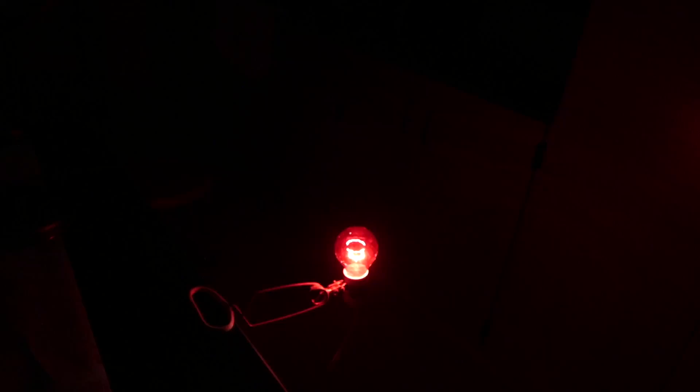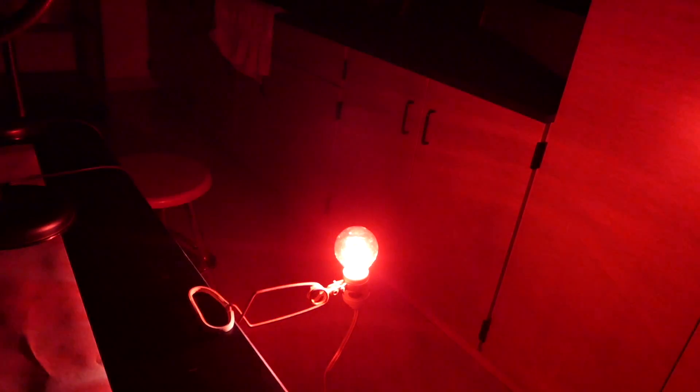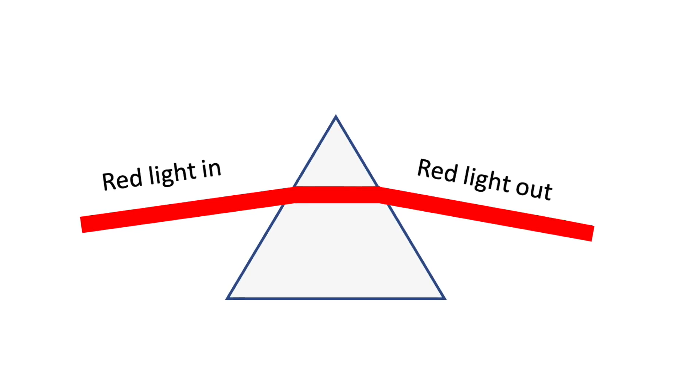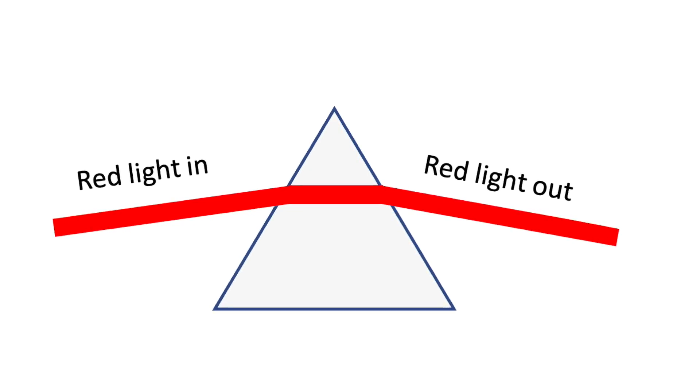However, Newton found that once the light was broken down to an individual wavelength, it couldn't be broken down any further. Red light going into a prism comes out as red light, and the same would be true for all the other individual wavelengths.